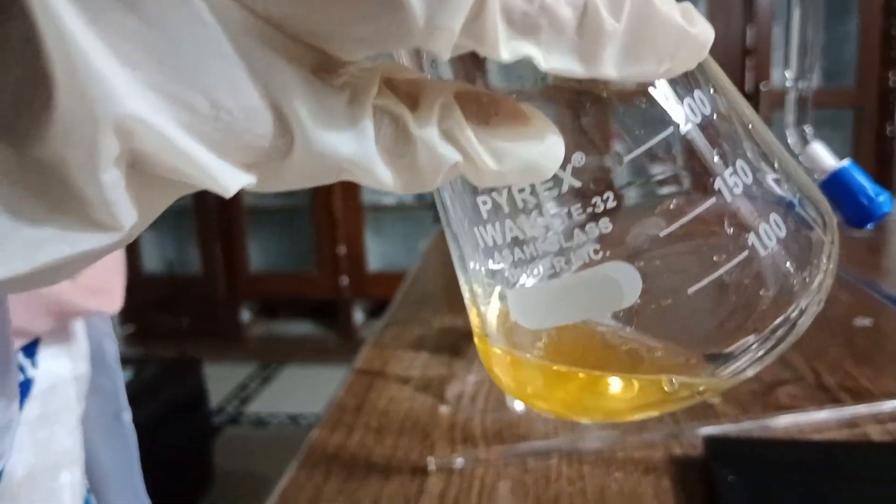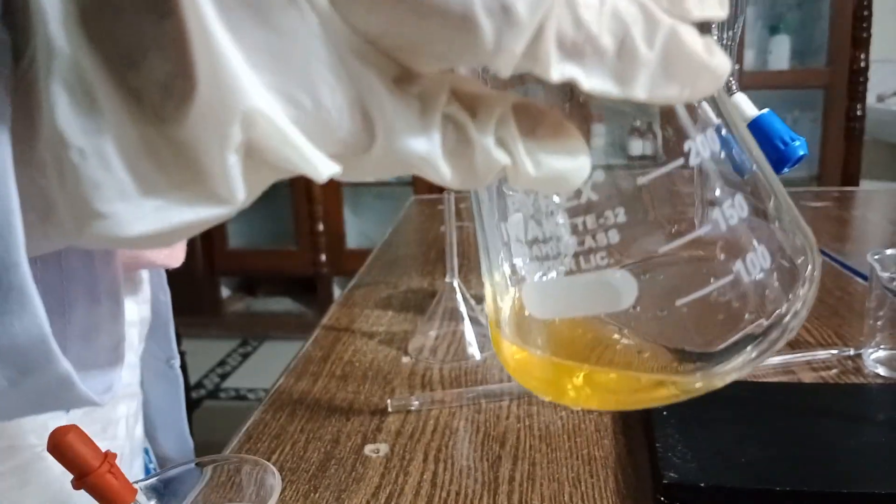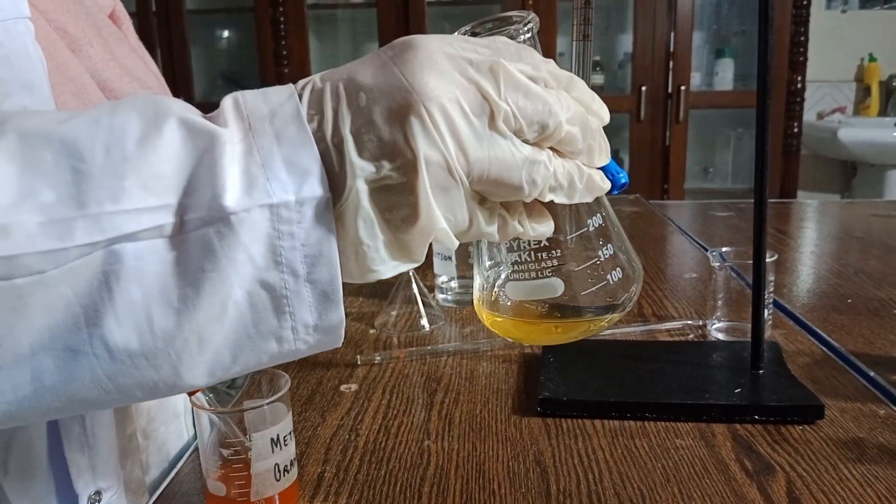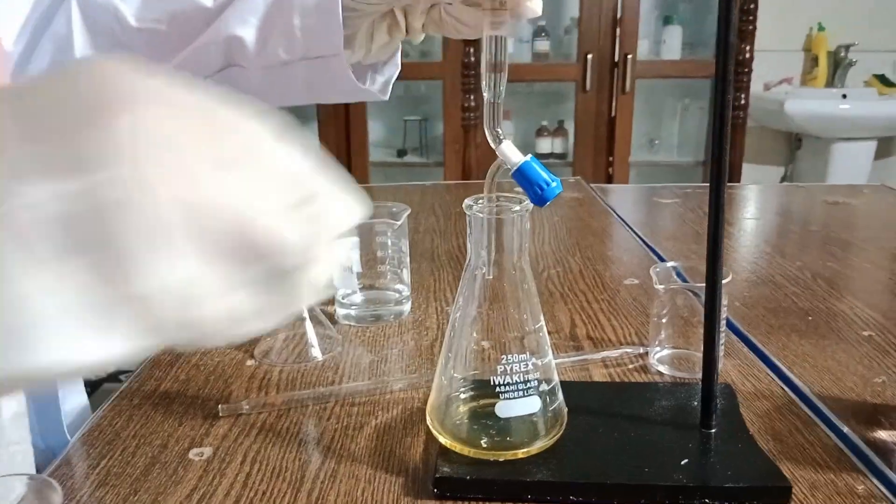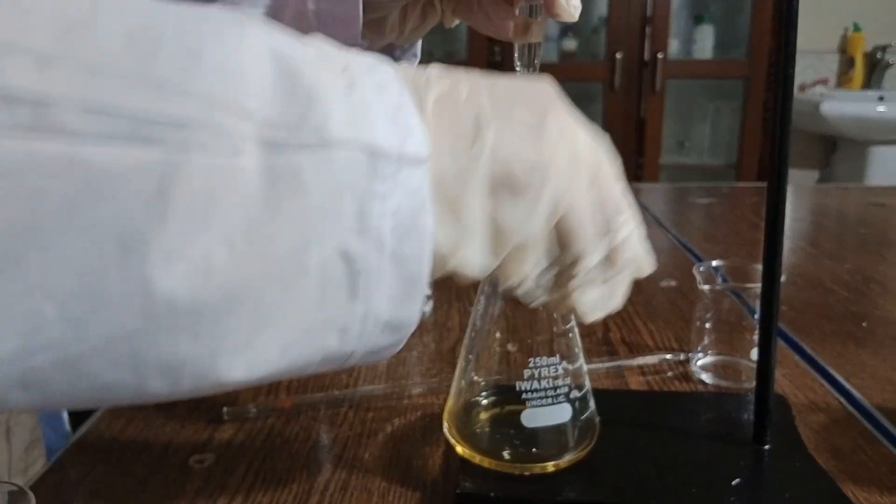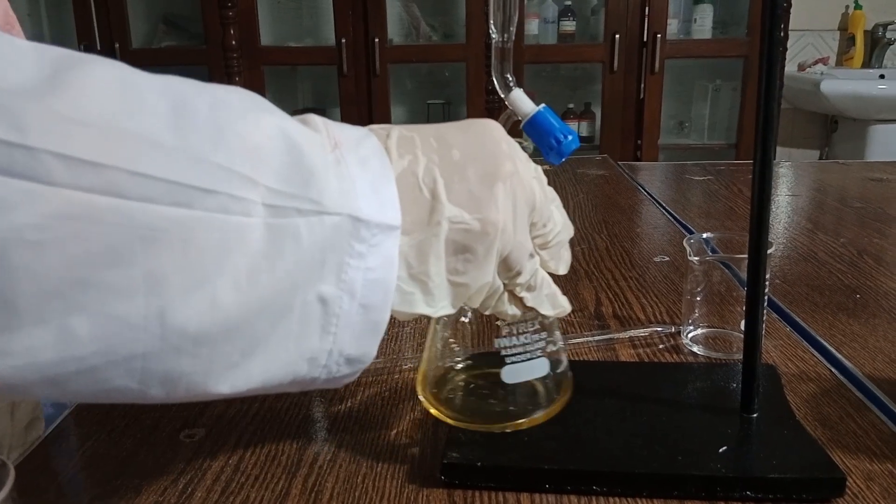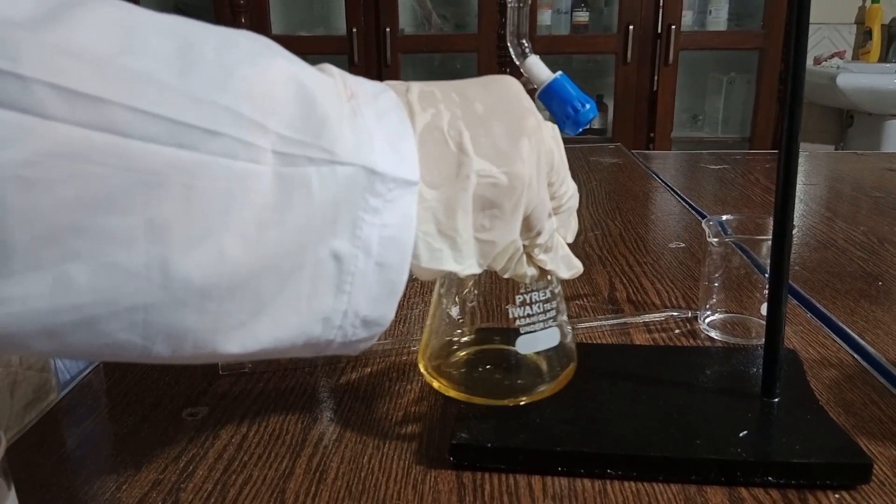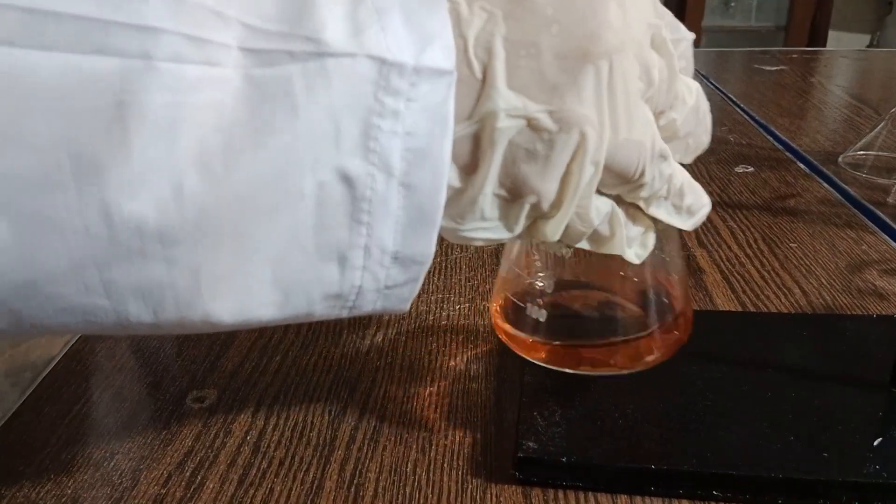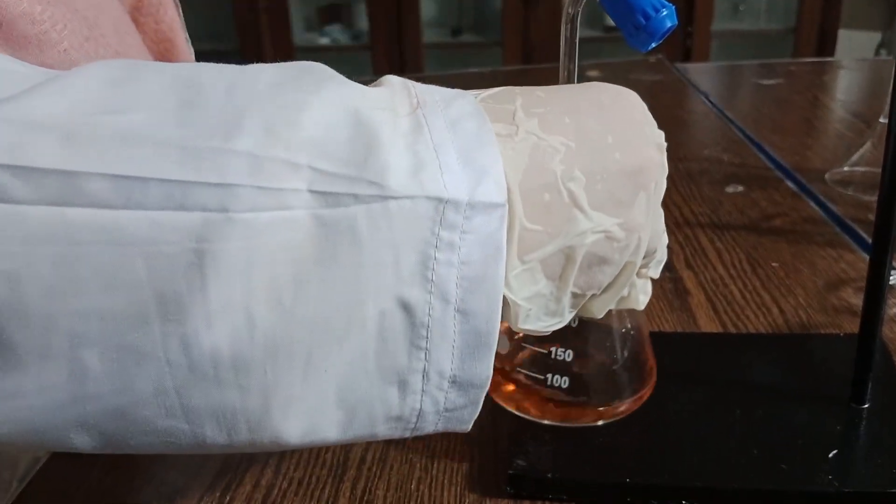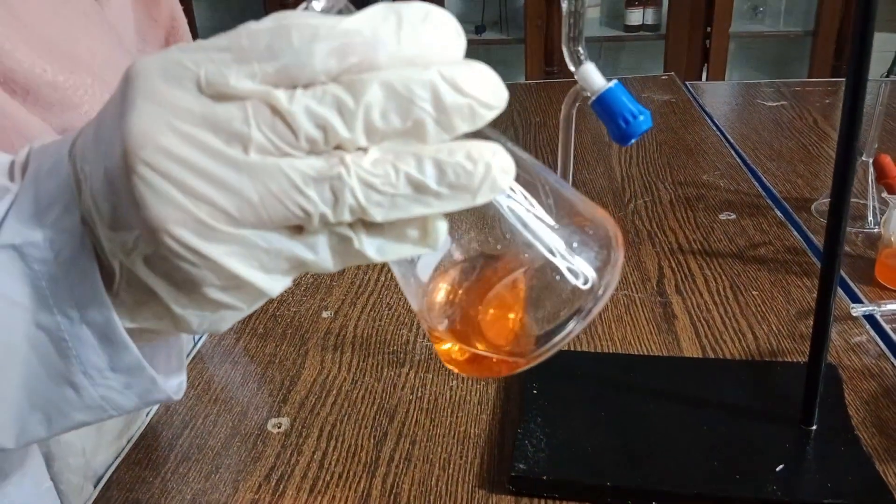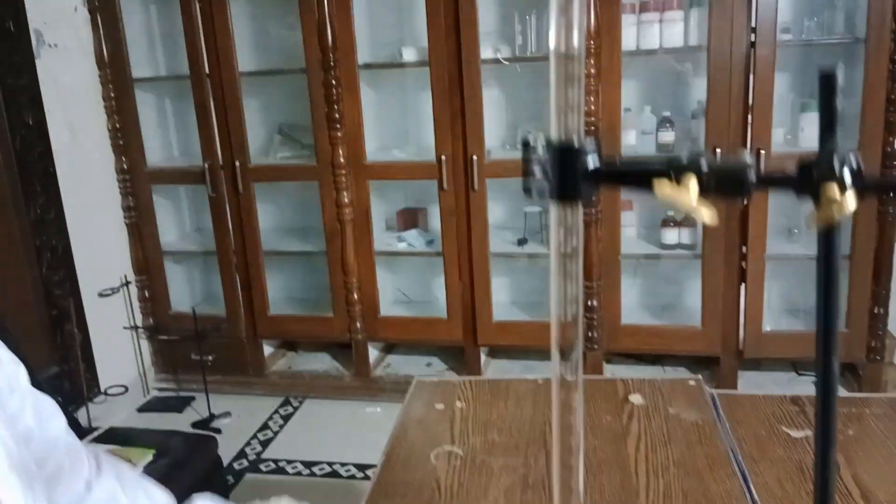Now perform the titration by adding hydrochloric acid from the burette dropwise near the endpoint. When the solution changes color from yellow to red, close the stopcock and note the final reading. The final reading is 10. Note this in the table and repeat the practical.